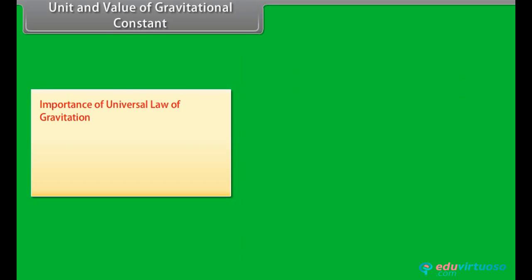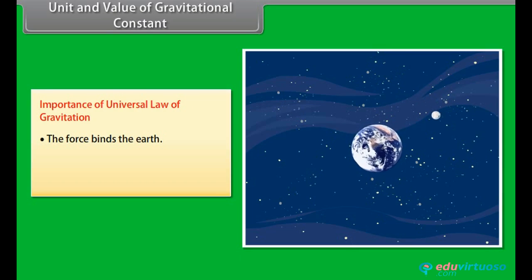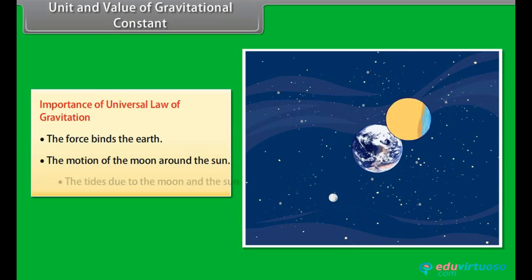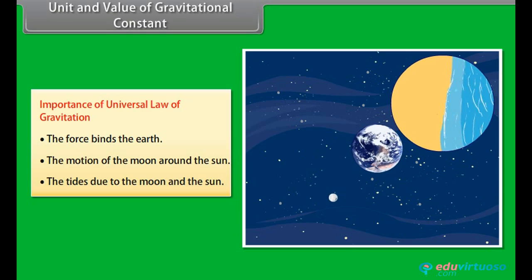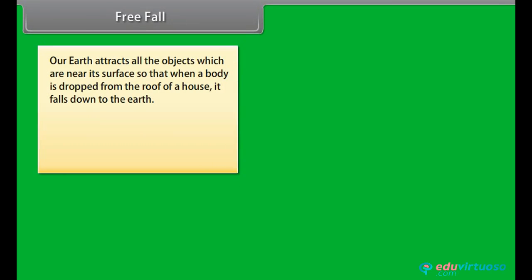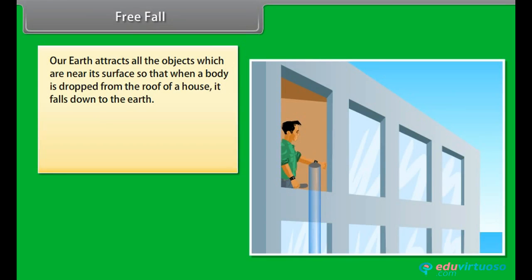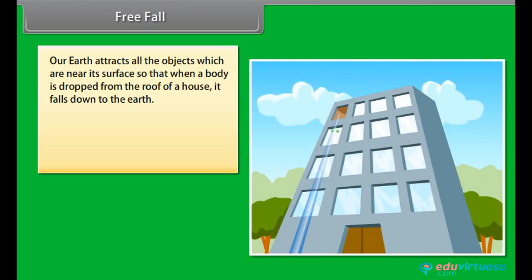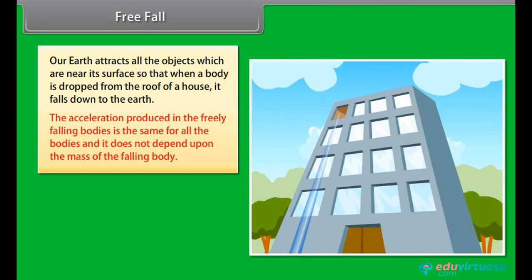Importance of universal law of gravitation: gravitation is the force that binds the earth, the motion of the moon around the Sun, and the tides due to the moon and the Sun. Free fall: our earth attracts all objects near its surface, so when a body is dropped from the roof of a house it falls down to the earth. The acceleration produced in freely falling bodies is the same for all bodies and does not depend upon the mass of the falling body.